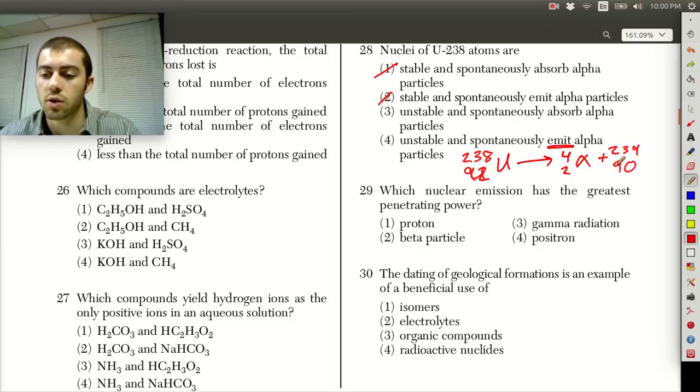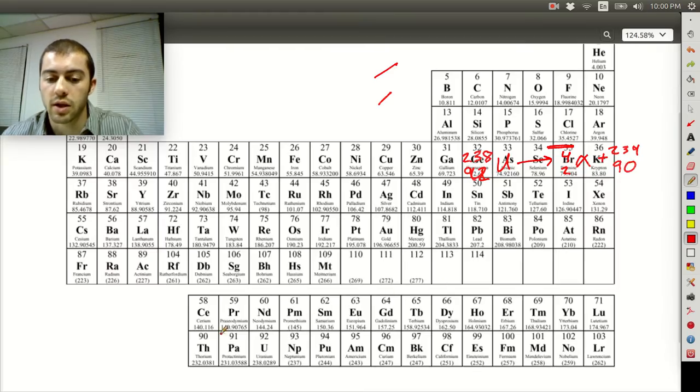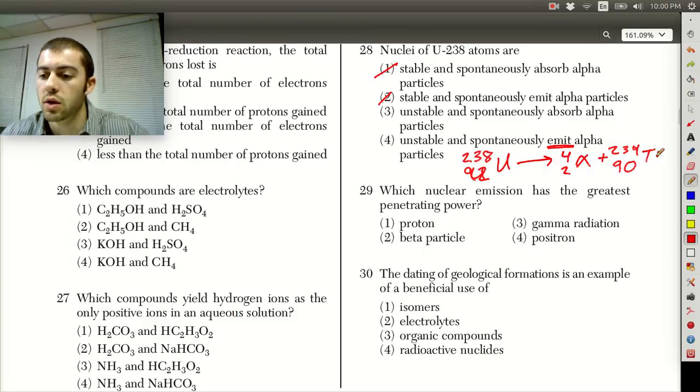So then we can actually decide which element this is going to be. Atomic number 90, that would be thorium here. So this would be 234, 90, TH would be the compound that's left over after the first alpha decay of uranium. But again, just know that alpha decay is an emission of alpha particles.